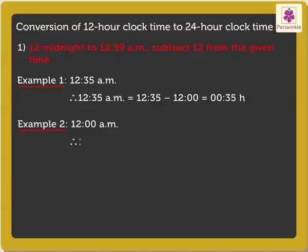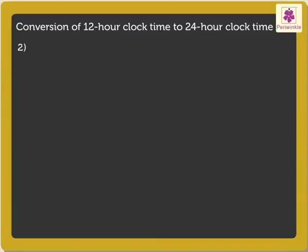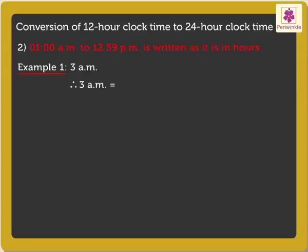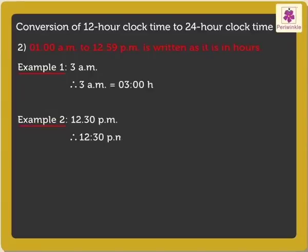12 midnight will be equal to 12 minus 12, which is equal to 0 hours. The time from 1 AM to 12:59 PM is written as it is in hours. For example, 3 AM is written as 03:00H and read as 0300 hours. 12:30 PM is equal to 1230 hours.